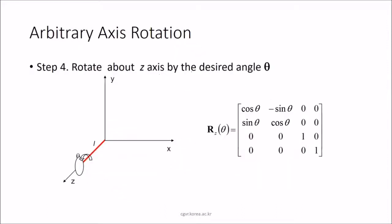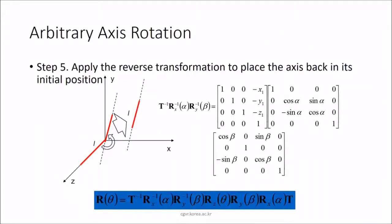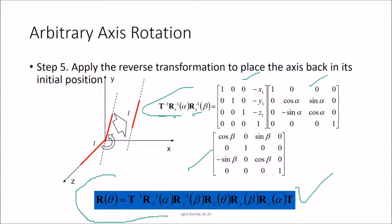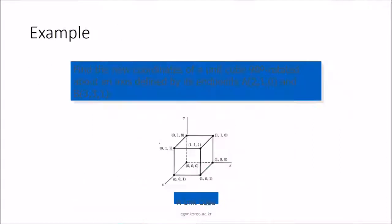Rotation about the z-axis by the desired angle theta uses a straightforward rotation matrix. For arbitrary axis rotation, we then apply reverse transformations: T-inverse, R-inverse, Ry-inverse to place the axis back to its initial position. The final rotation about any arbitrary axis is the product of all these matrices.